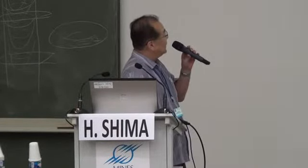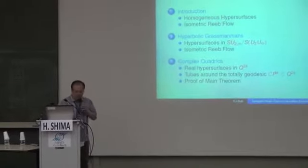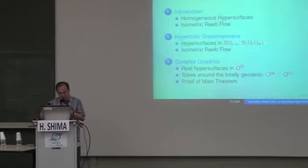As much as possible within the time limit of 20 minutes, I want to explain my recent research activity in much more detail from historical viewpoints in this kind of Hermitian symmetric space. The first part is historical viewpoints on hypersurfaces with isometric Reeb flow. The second part introduces recent research on hypersurfaces with isometric Reeb flow. And finally, I would like to briefly mention real hyperspace in complex quality with isometric Reeb flow.